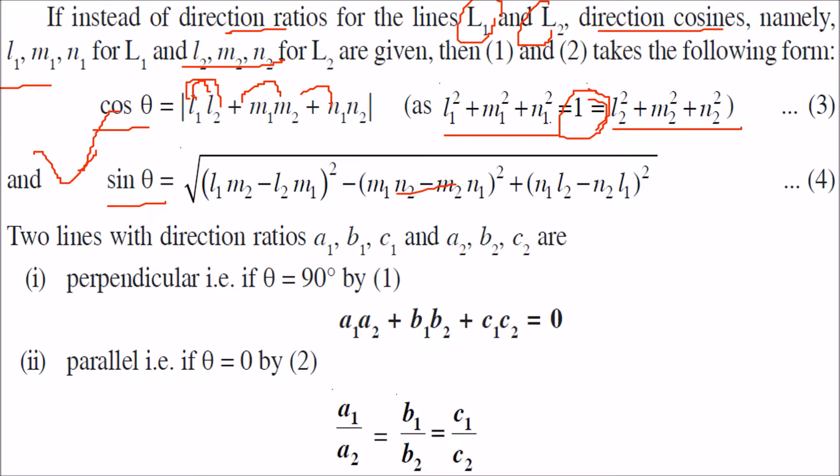Here we observe that two lines with direction ratios, if they are perpendicular, the angle is 90 degrees. So cos 90 equals 0, so the numerator will be 0.